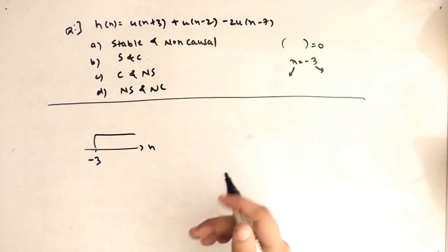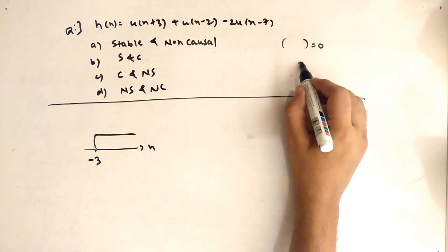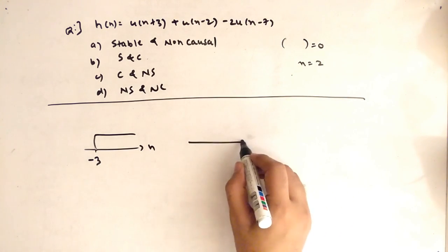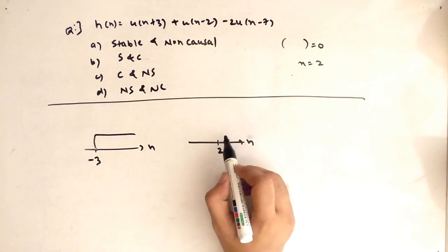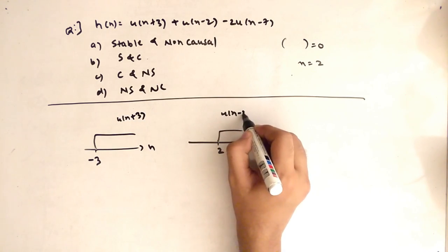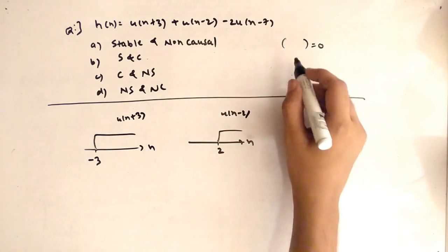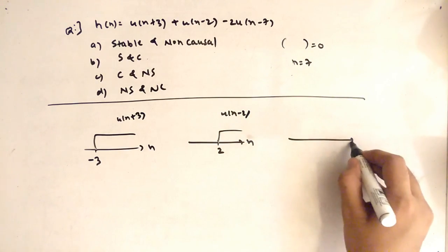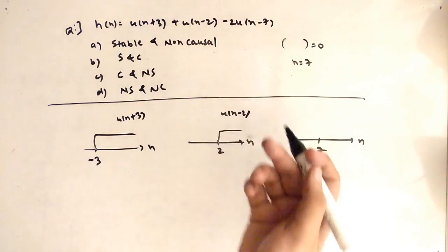Next, for u[n-2]: set n-2=0, so n=2. The u[n] graph starts at origin n=2, extending to the positive side. So this is the graph of u[n-2] with its starting point at n=2.